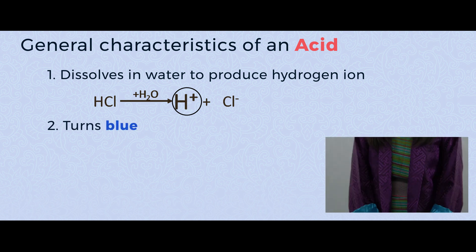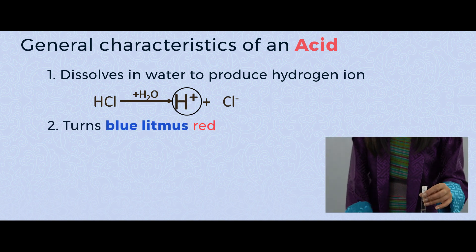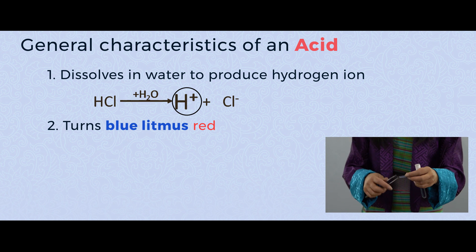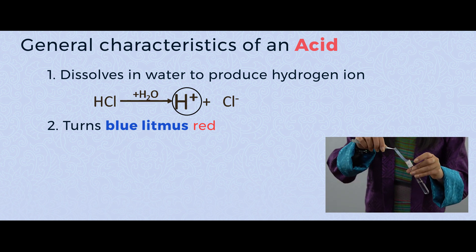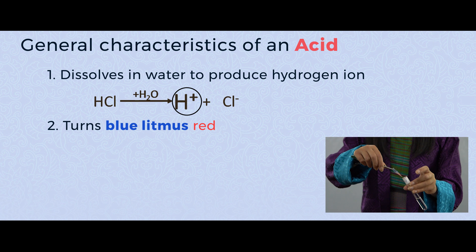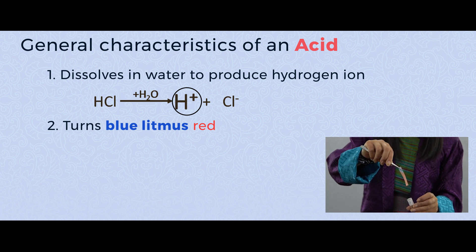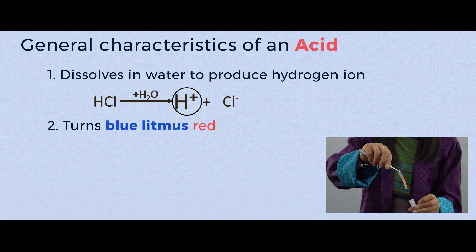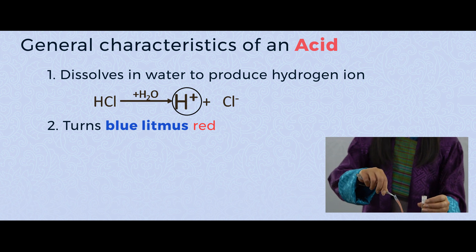Second characteristic: acid turns blue litmus red. I am going to put a blue litmus paper in the acid — you can see the blue litmus paper has turned red. This shows that vinegar is an acid.